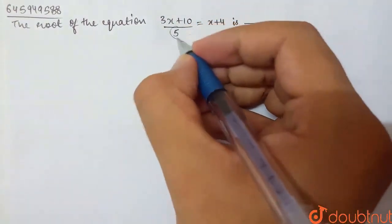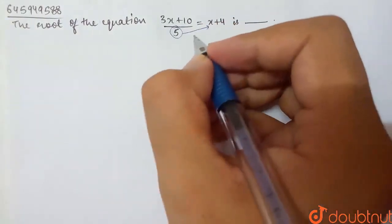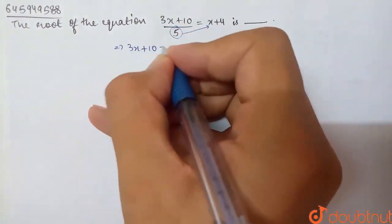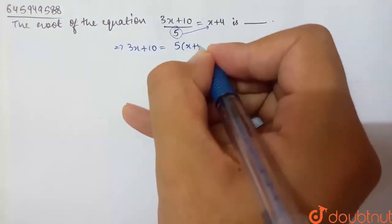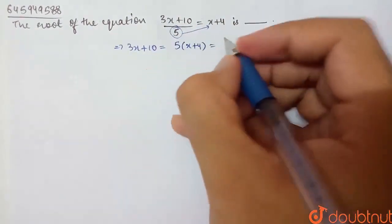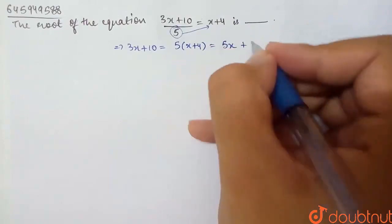let's look at the equation. The denominator term is 5, so I can cross multiply this. Basically, 3x plus 10 is equal to 5 times (x plus 4). 5 into x is 5x, and 5 into 4 is 20.